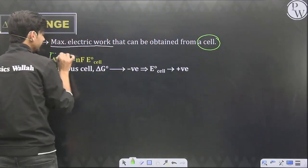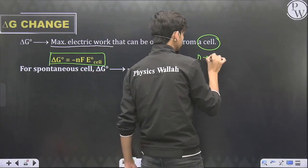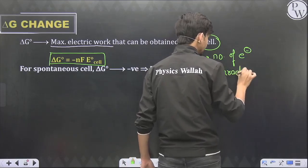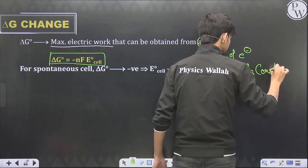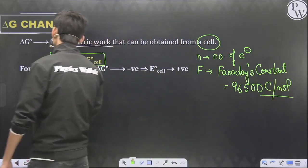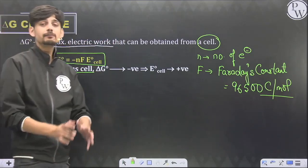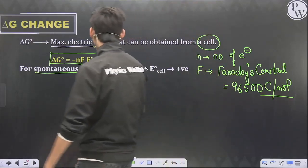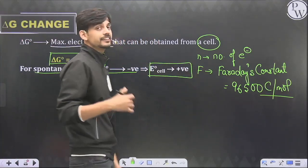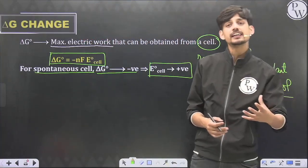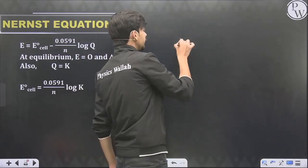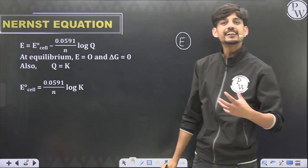The value of F is 96500 coulombs per mole. For a spontaneous process, delta G should be negative. Since there is already a negative sign in the expression delta G° = –nFE°cell, for a spontaneous galvanic cell E°cell should be positive. Simply: a cell giving positive voltage is spontaneous and one giving negative voltage is non-spontaneous.